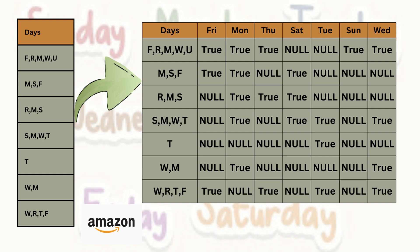Hello all, welcome back to my channel Data Sculptor. Today we are going to cover another interesting SQL question. We have a table called 'combination' where you have a 'days' column containing combinations of letters like F, R, M, W, U and M, S, F, R, M, S, and so on. F means Friday, R means Thursday, M means Monday, W means Wednesday, and U means Sunday. For each entry, if F is Friday, the Friday column should be true.